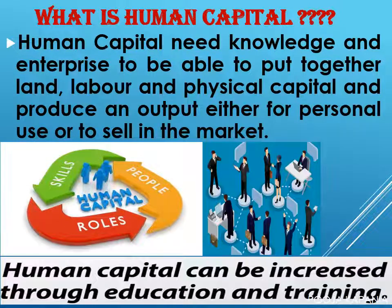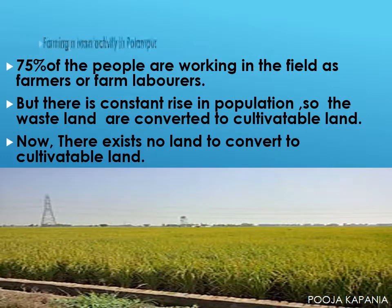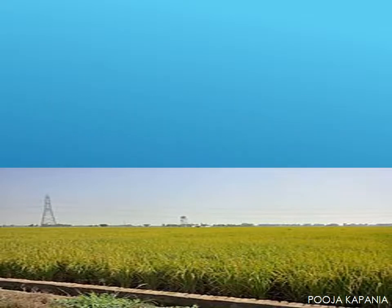You will need knowledge and enterprise to be able to put together land, labor and physical capital and produce an output either to use yourself or to sell in the market. This, these days, is called human capital. Every production is organized by combining land, labor, physical capital and human capital, which are known as the factors of production.